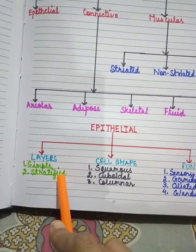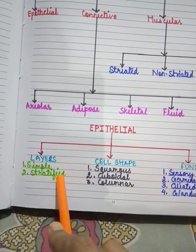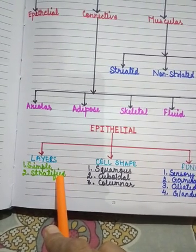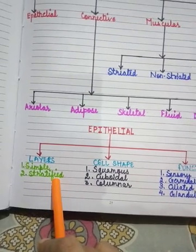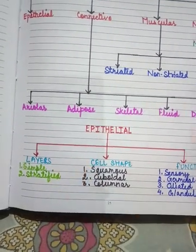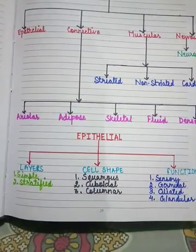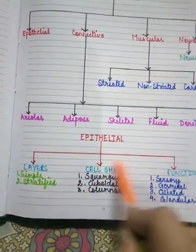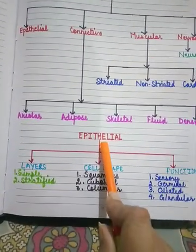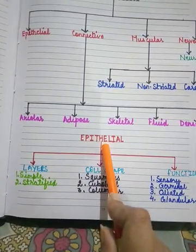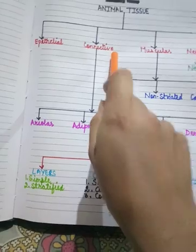Stratified epithelial tissue is found on the skin all over and in the cornea. This concludes the discussion on epithelial tissue. Now we will talk about connective tissue.